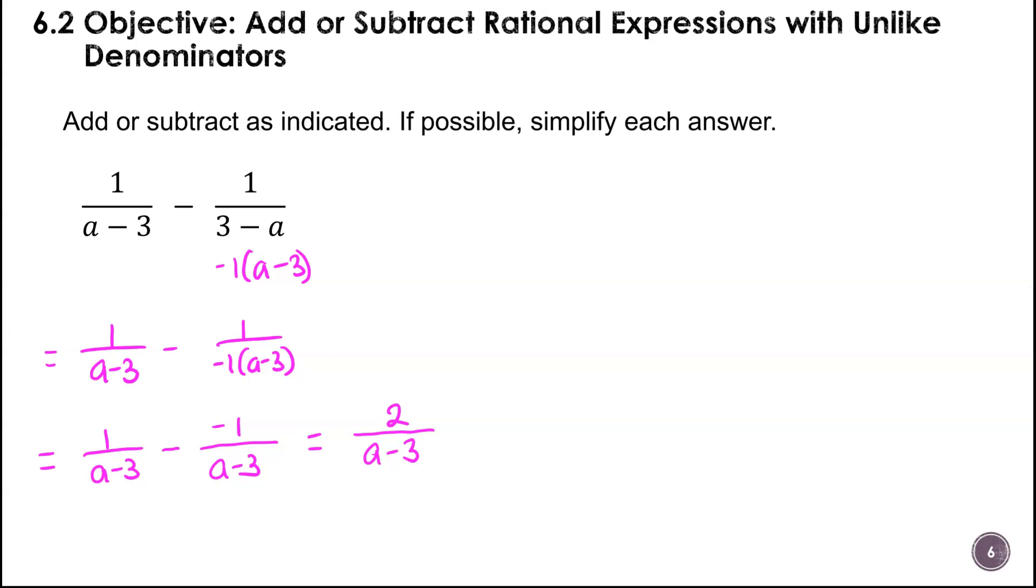When you factor out the negative 1, that allows you to have the same denominator. Sometimes a student will say, my LCD is A minus 3 times 3 minus A, but that's not really true. You could get there, but it's a lot more work than you had to do. Just try to notice when you have opposites and work this out as easy as possible.